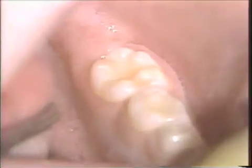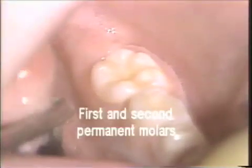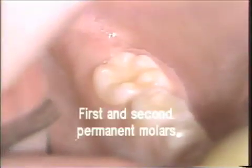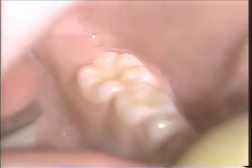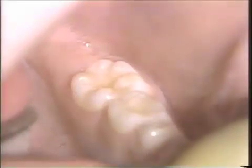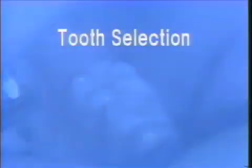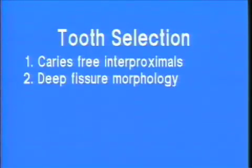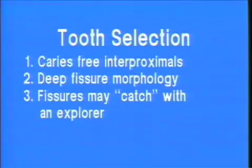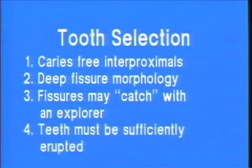The best candidates for fissure sealants are the first and second permanent molars, since the pits and fissures of these teeth are most susceptible to caries. Ideally, sealants should be applied to the teeth as soon as they have erupted into the mouth. Tooth selection should also be based on the following criteria: interproximal surfaces should be caries-free, teeth should demonstrate deep fissure morphology, fissures may catch with an explorer, and teeth must be sufficiently erupted so that a dry field can be maintained.